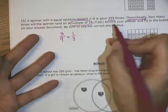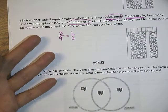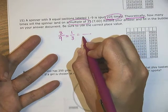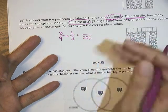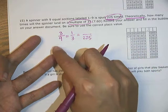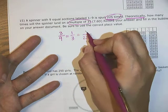Then it says, if it's spun 225 times, and remember, we're making predictions here. And any time we make a prediction, we're going to make a proportion. And this is my unknown.